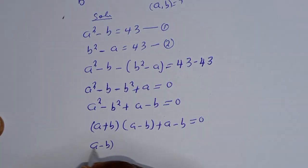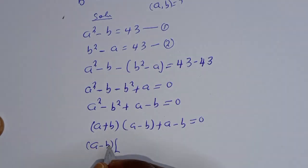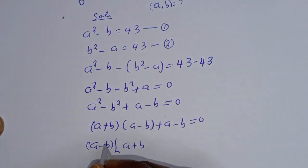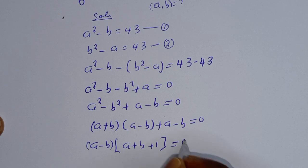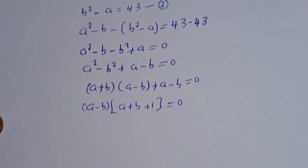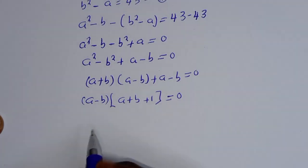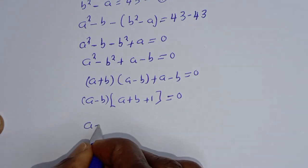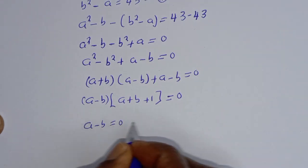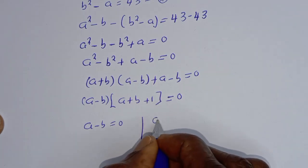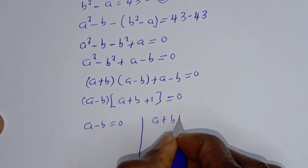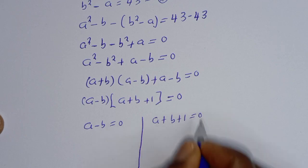Factoring out (A minus B), we get (A minus B)(A plus B plus 1) is equal to 0. There are two cases here. The first case is A minus B is equal to 0, and the second case is A plus B plus 1 is equal to 0.